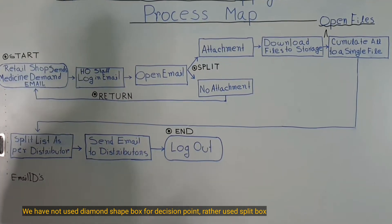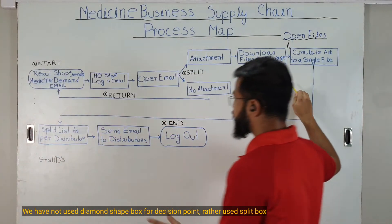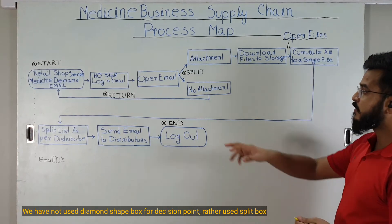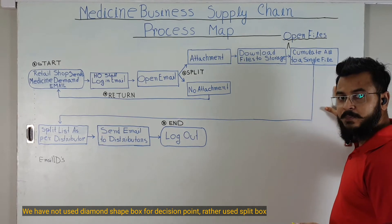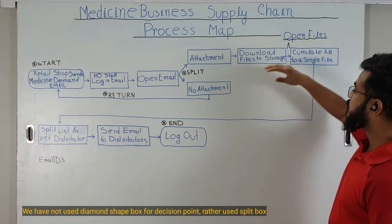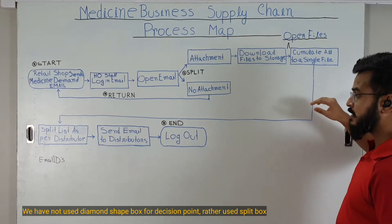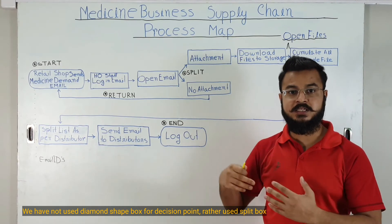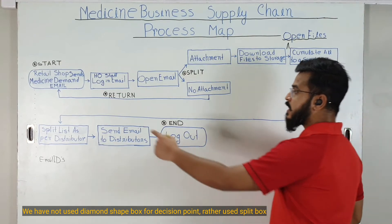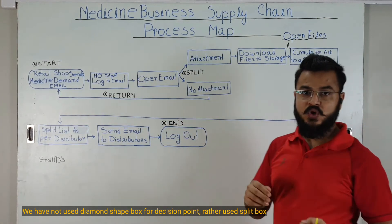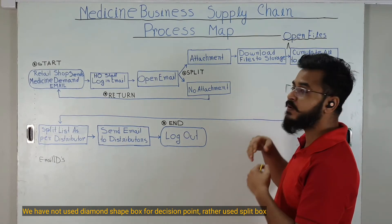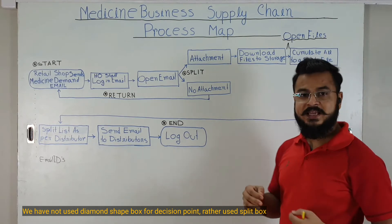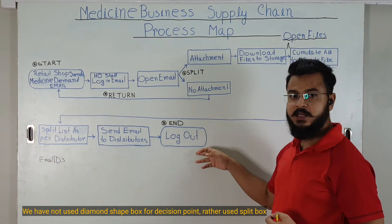Always write your process map from left to right, as if you are writing on a page. When you have reached the extreme right of your page, don't write the next step at the top of your previous line — rather write at the bottom, because while reading we read from top to bottom, not bottom to top. The third point is that the start and end process step shapes should be different from the rest of the step shapes. Last but not least, always maintain the same size of shapes and text.